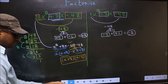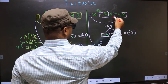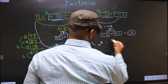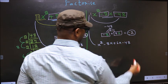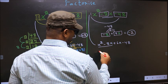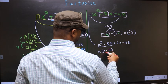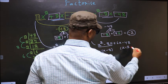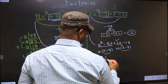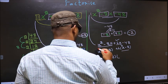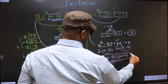Now for the second expression, change it to x squared. In place of minus 2x, we write minus 8x plus 6x, giving x squared minus 8x plus 6x minus 48. From the first two terms, take out x common: x(x minus 8). From the last two terms, plus 6 is taken out: plus 6(x minus 8). Now take out (x minus 8) common, giving (x minus 8)(x plus 6). This is the answer for the second one.